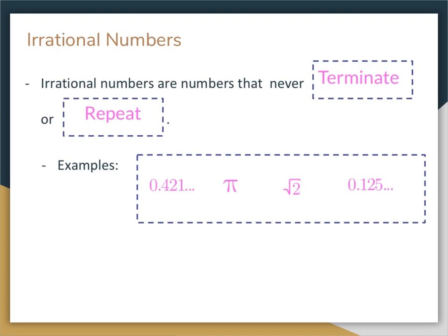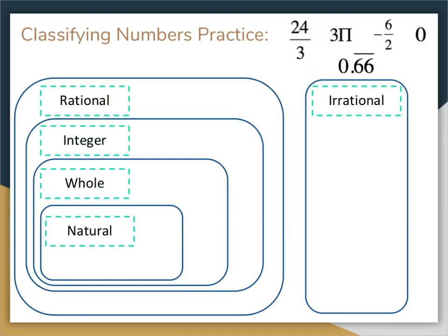Let's try some practice problems. Classify the following numbers: 24 divided by 3, 3π, negative 6 halves, 0, and 0.66 repeating. Pause the video now, try and put those numbers where you think they belong, then press play again to see if you are right.